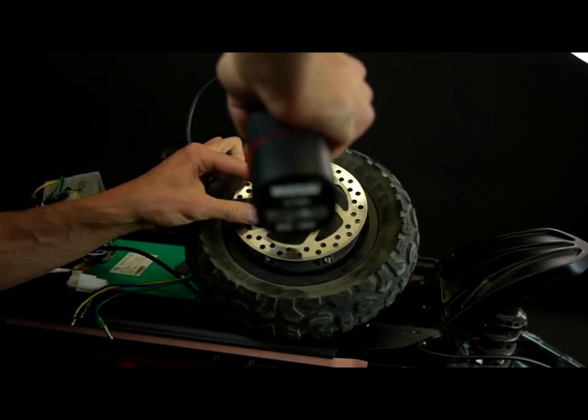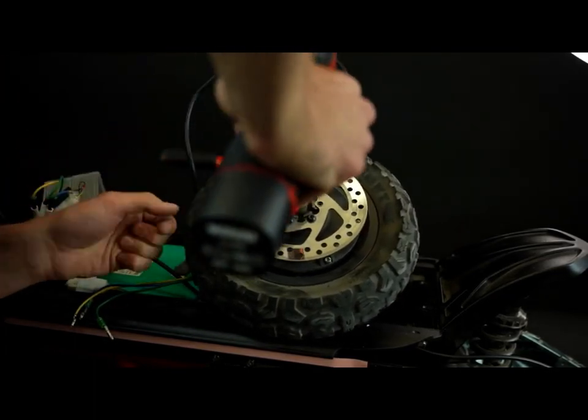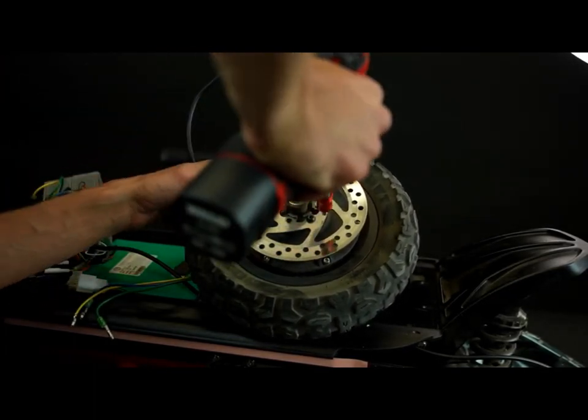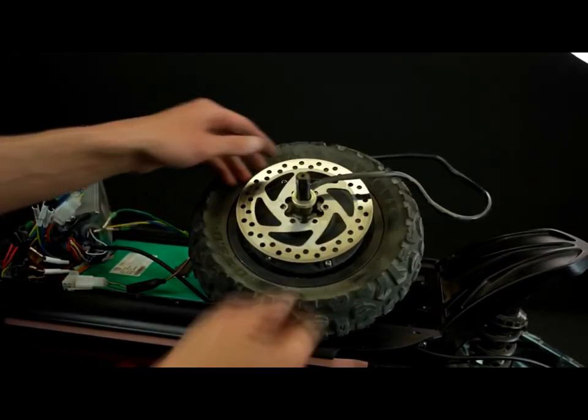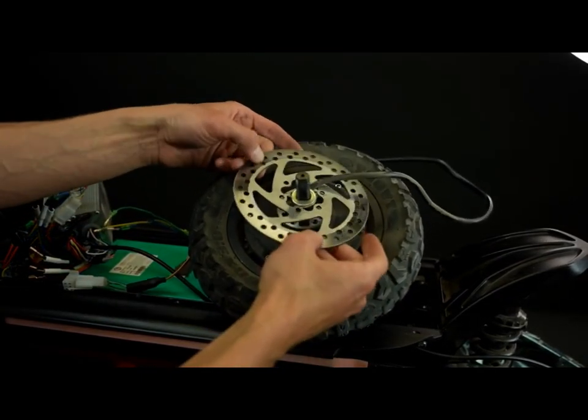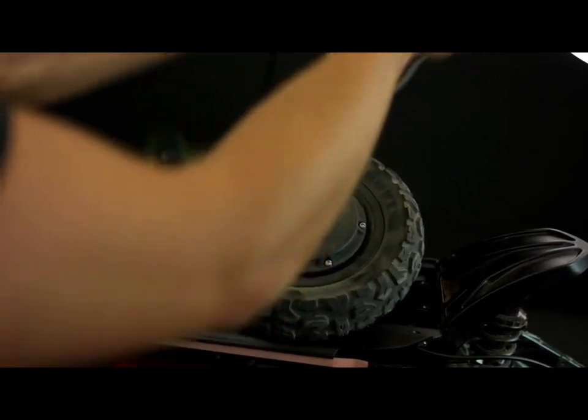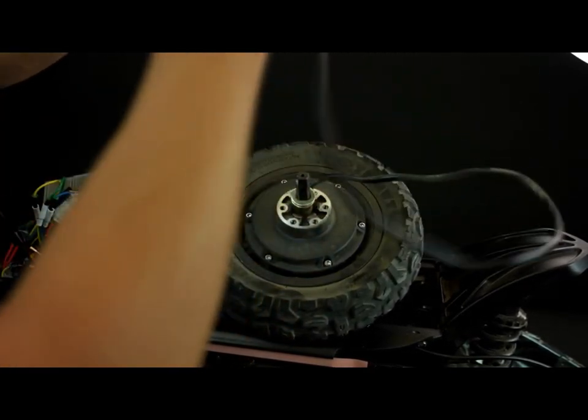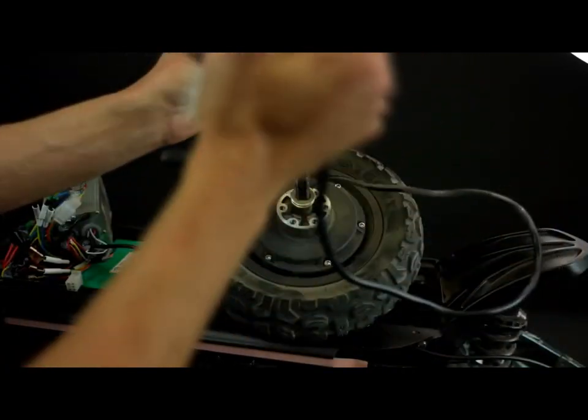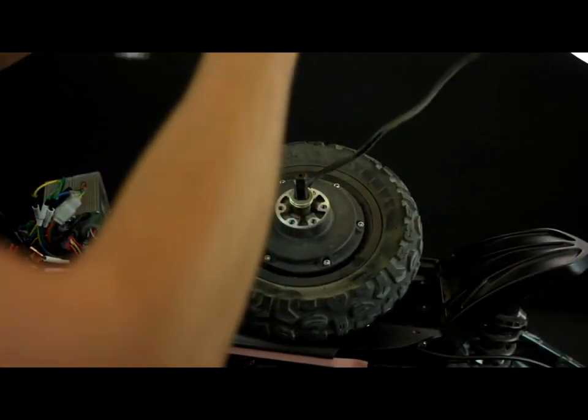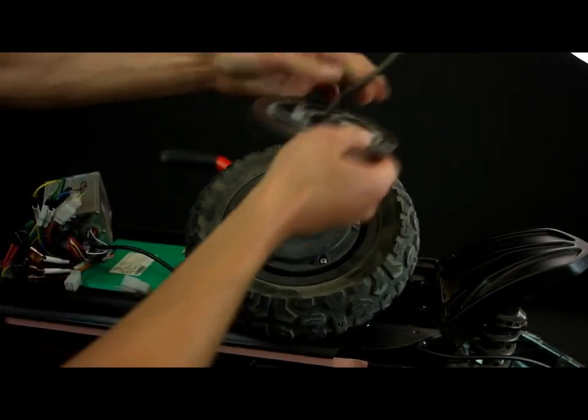Now unscrew the six hex screws that hold the brake disc in place. Remove your old brake disc and install a new one. Take your new brake disc and make sure to follow the arrow on the disc that shows the rotation direction.